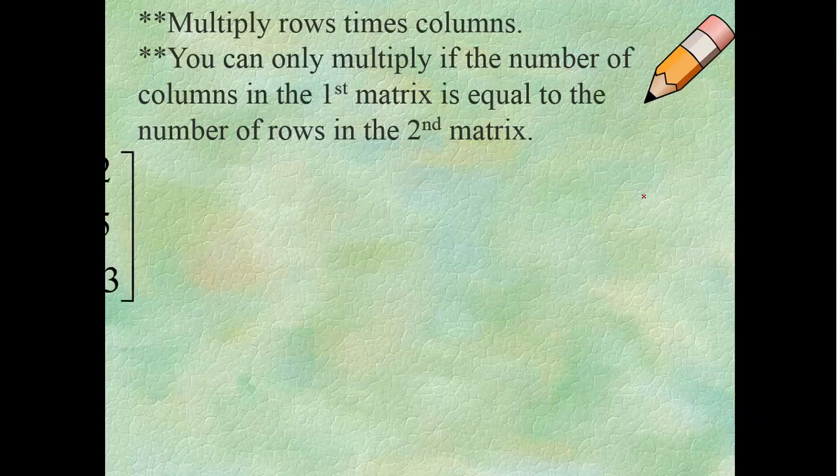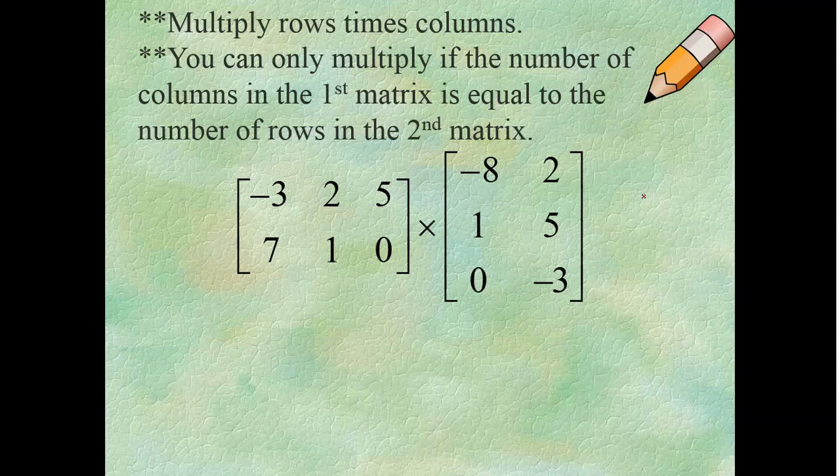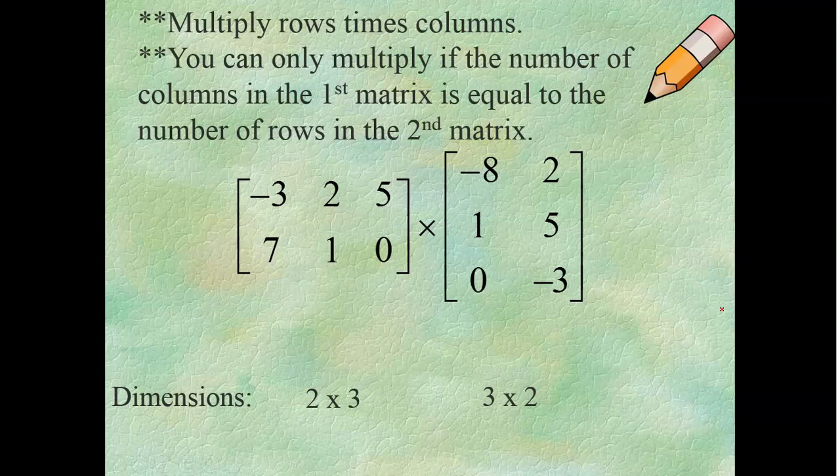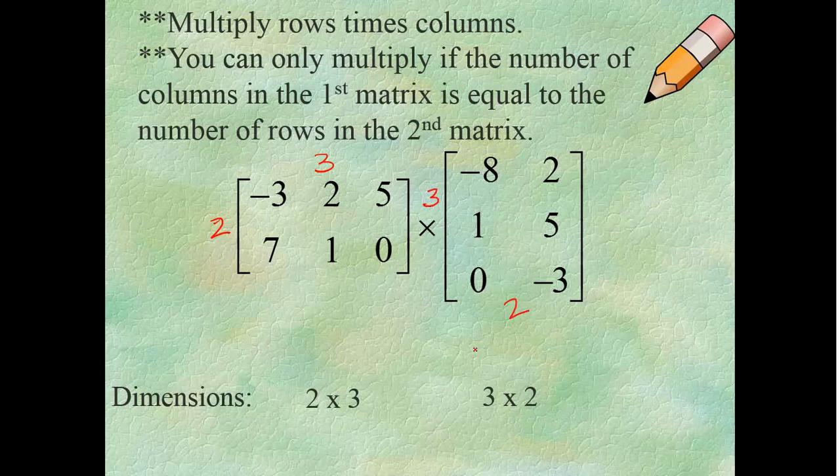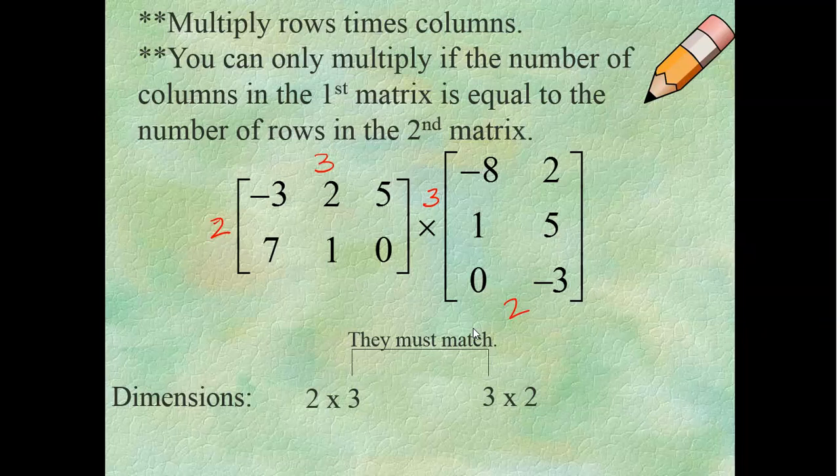You're probably like, what does that mean? Well, here's two matrices. I know the first matrix is a 2 by 3. There are two rows by three columns, right? This one is three rows by two columns. Now, what has to happen? Your inside numbers need to match. So, my columns must match my rows.